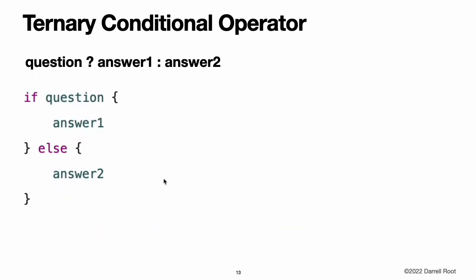The ternary conditional operator is a special operator with three parts, which takes the form: question ? answer1 : answer2. It is a shortcut for evaluating one of two expressions based on whether question is true or false. If question is true, it evaluates answer1 and returns its value. Otherwise, it evaluates answer2 and returns its value.